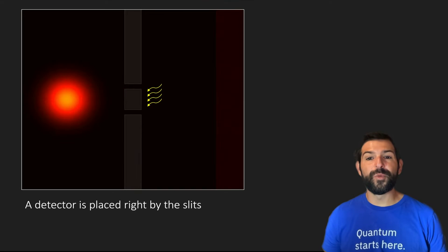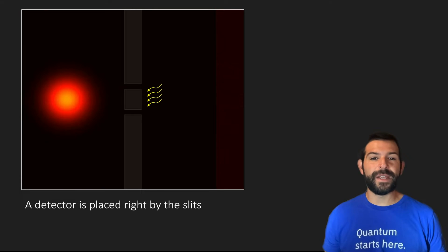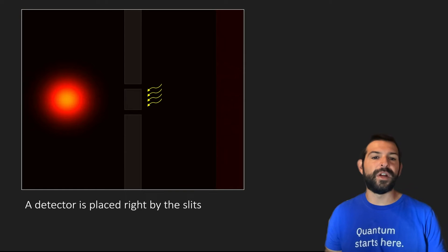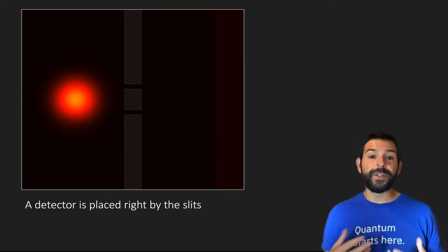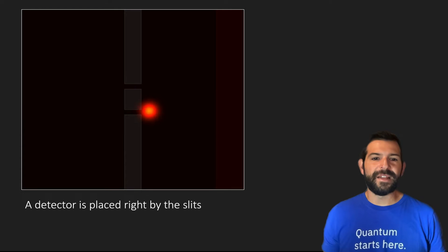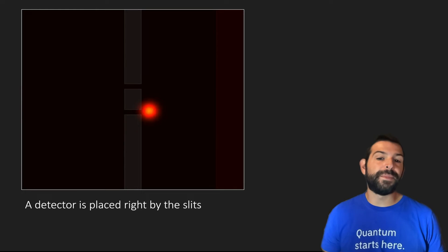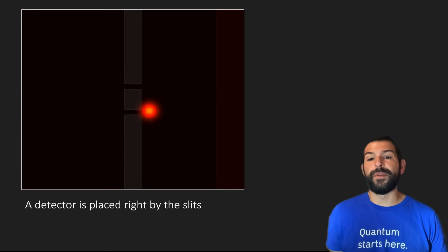For example, if we send an electromagnetic wave with a wavelength small enough to discern which slit the electron went through, what we observe is that just like in the measurement that takes place on the screen, the particle gets localized right at the slits — with 50% probability of being found going through the top slit and 50% probability of being found going through the bottom slit.